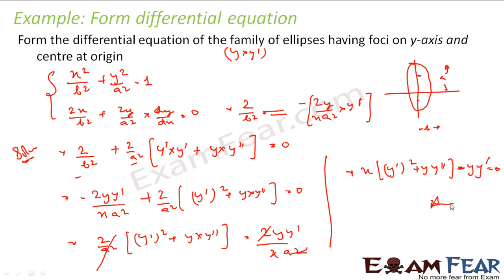The key here was understanding the question asks for a family of ellipses with foci on the y-axis and center at the origin, leading to this form of equation with two variables a and b, so we differentiated twice to get the answer.